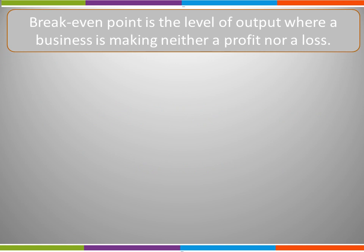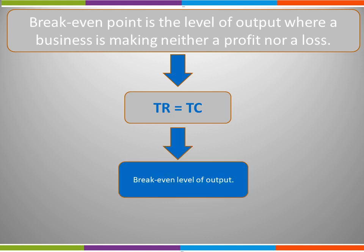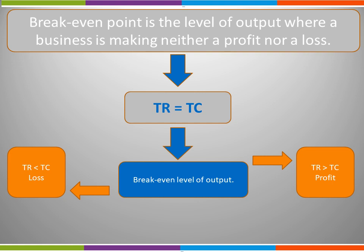Breakeven point is the level of output where a business is making neither a profit nor a loss. At this point total revenue will be equal to total cost — we call this the breakeven level of output. If a business operates at a lower level of output, total revenue will be lower than total cost and the business is making a loss. If operating at a higher level, total revenue will be greater than total cost and the business is making a profit.